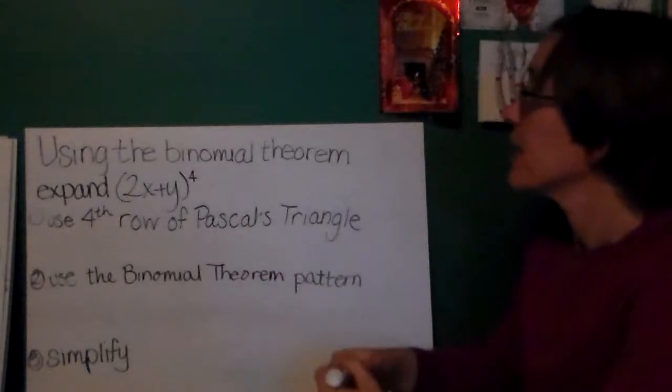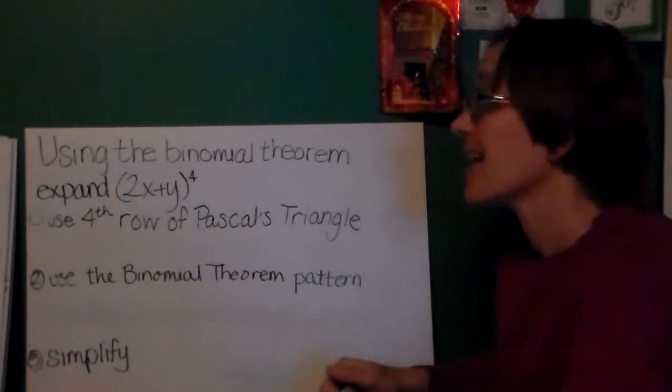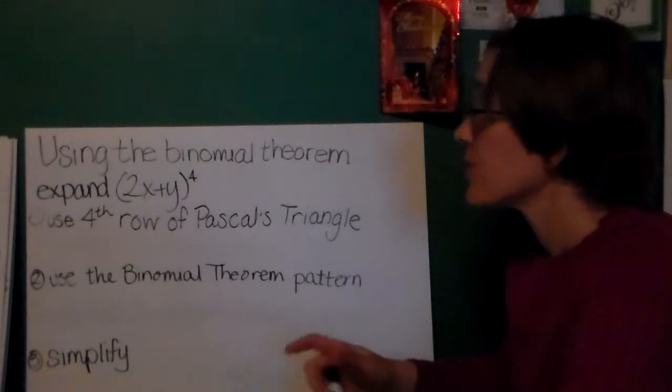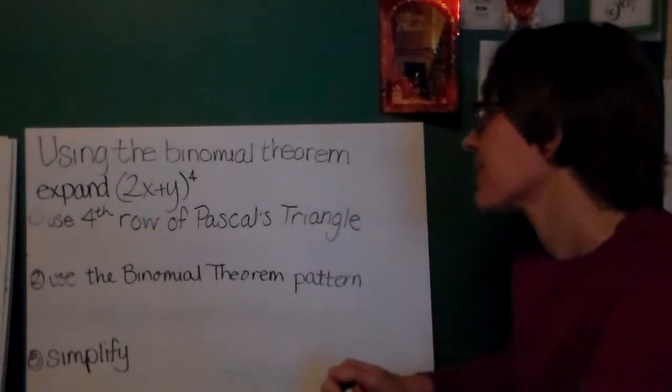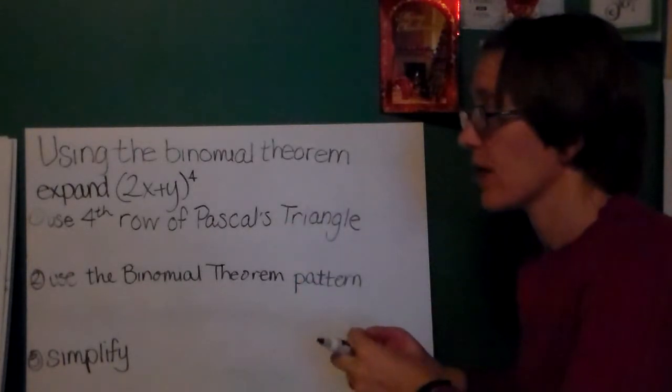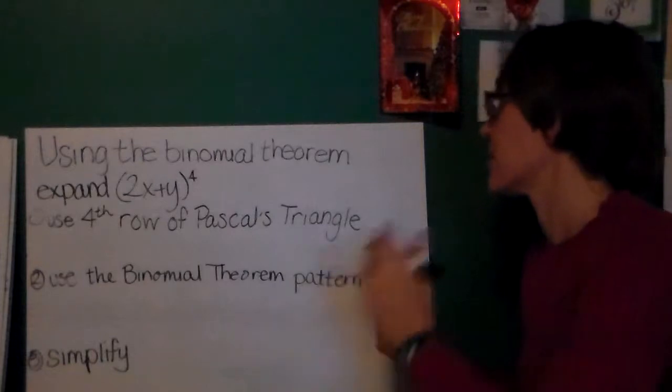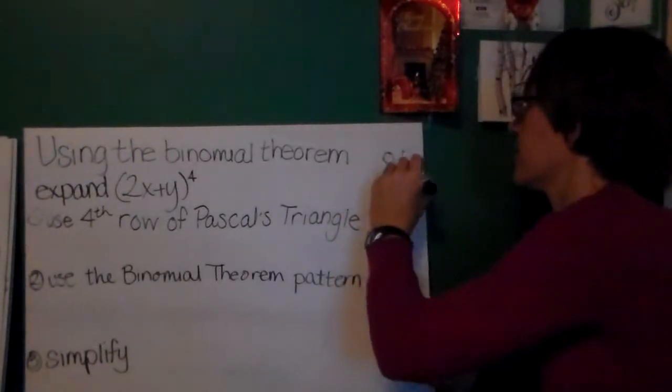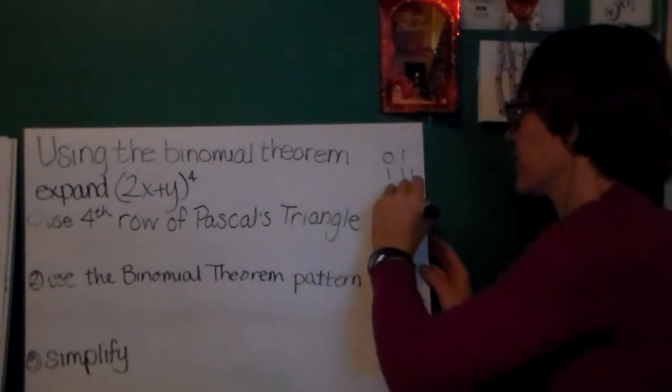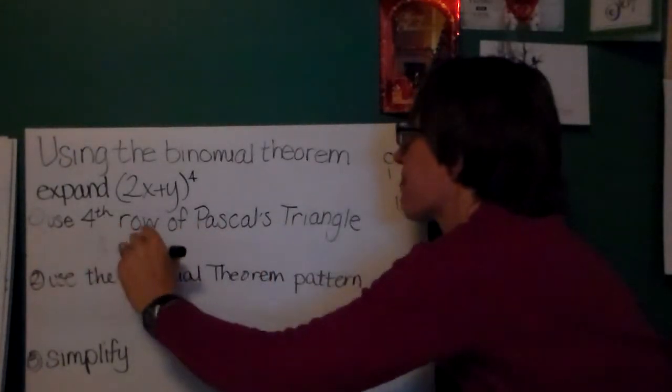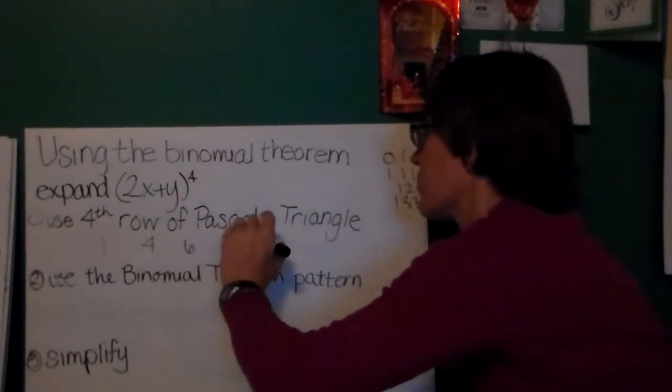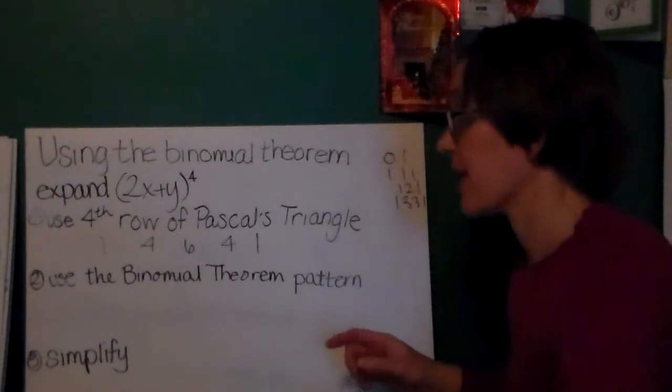Okay, so using the binomial theorem, expand 2x plus y to the 4th power. So first, I'm going to use the 4th row of Pascal's triangle. Now, the 4th row of Pascal's triangle is, row 0: 1, row 1: 1, 1, row 2: 1, 2, 1, row 3: 1, 3, 3, 1. Okay, so row 4 is 1, 4, 6, 4, 1. These are the numbers I'm going to be multiplying things by.